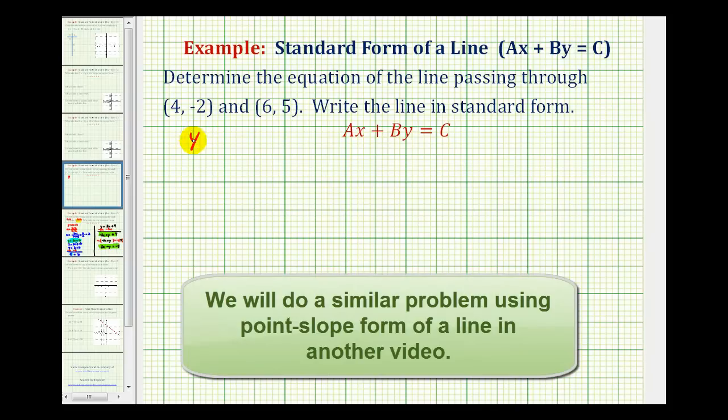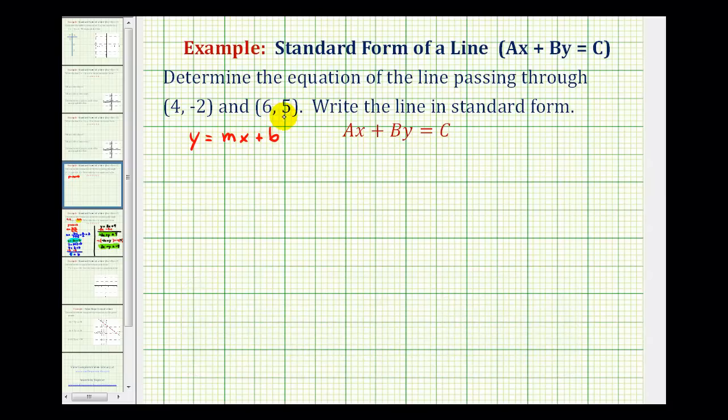So we'll use the equation y equals mx plus b. Since we're given two points on the line, we can determine the slope of the line by determining the change in the y-coordinates, or y₂ minus y₁, divided by the change in the x-coordinates, or x₂ minus x₁. So we'll start by determining the slope.